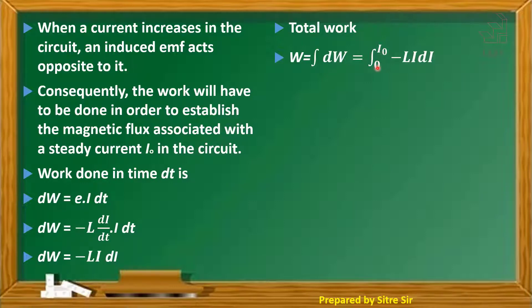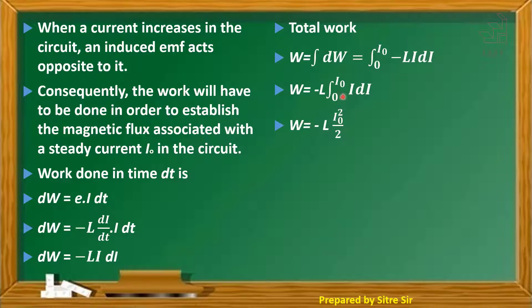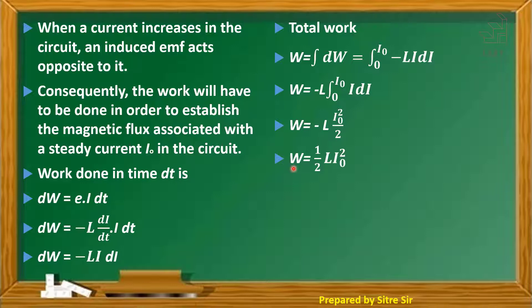Integrating from limit 0 to I₀, we get minus L times the integral of I dI. The integration of I dI gives I² by 2. Putting the upper and lower limits, the total work done required to establish this flux is minus L times I₀ squared by 2.